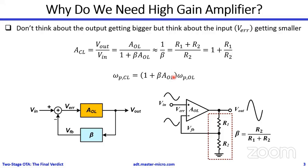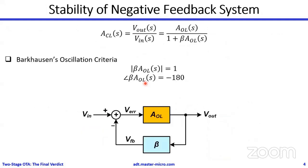When we put our amplifier in a negative feedback configuration, we end up with the famous closed-loop gain formula. When we have large open-loop gain, the closed-loop gain becomes independent of the open-loop gain. Think about the input getting smaller rather than the output getting bigger - the error voltage of the op-amp decreases as the gain goes higher, giving more precise closed-loop gain. The bandwidth is expanded by the factor one plus the loop gain, so gain is reduced but bandwidth expands and the gain-bandwidth product remains constant.